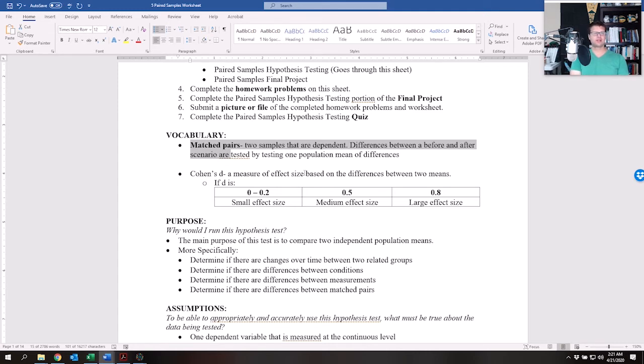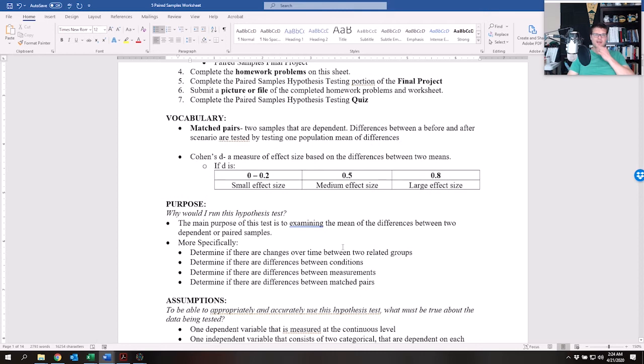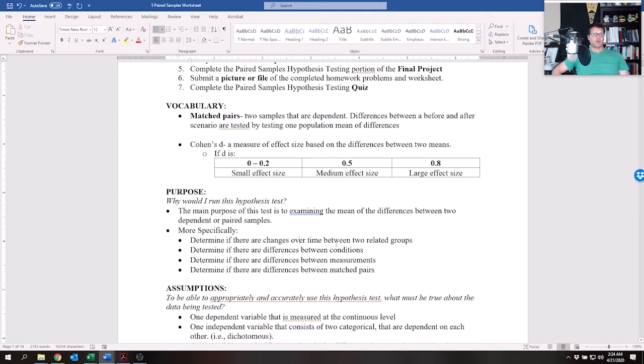Next, Cohen's D. We're still using effect sizes. This is Cohen's D effect size, so just be aware of that. Okay, so what is the purpose of this particular hypothesis test? Why would I run this hypothesis test? The main purpose of this test is to examine the mean of the differences between two dependent or paired samples. More specifically, you might have a sample where you have two different scores for the exact same sample.